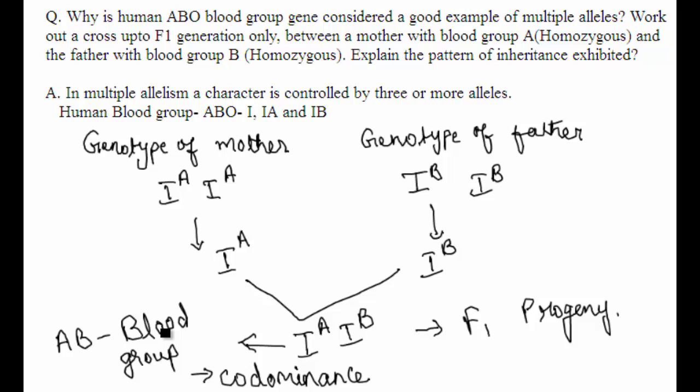When IA and IB are present together, both types of sugars are made on the RBCs, which is why the blood group is AB. The pattern of inheritance exhibited here is codominance.